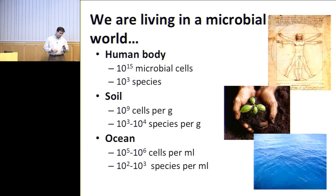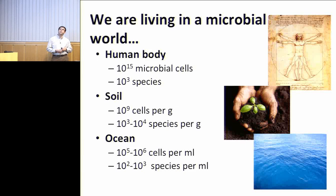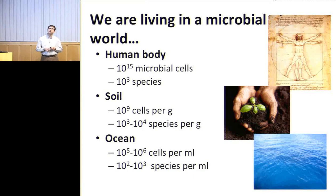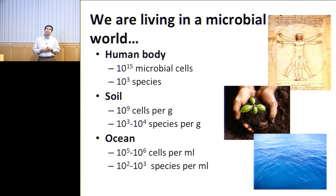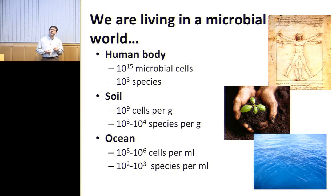The one that gets us our money in my lab is looking at the human body and the communities associated with the host. The human body is made up of about 10 to the 15 microbial cells distributed among 100 to thousands of species. You are really a scaffold for microbial life. Thinking about soil — a gram of soil contains about 10 to the 9 cells per gram distributed among thousands to tens of thousands of species. Most of our antibiotics and small molecules come from bugs that love living in the soil, or from the ocean where there's perhaps 100,000 to a million cells per mil, with perhaps lower richness on the order of 100 to thousands of species per mil. All these environments are important.